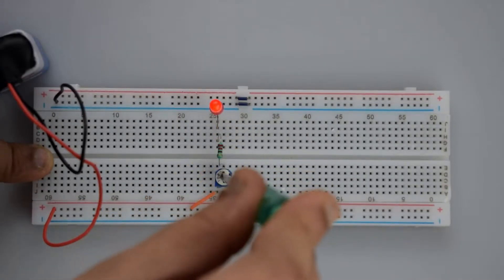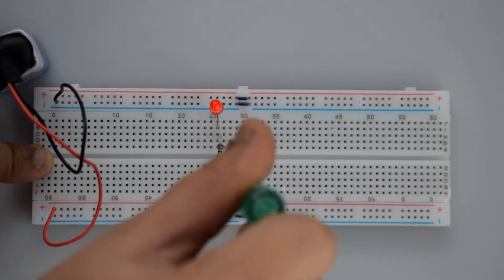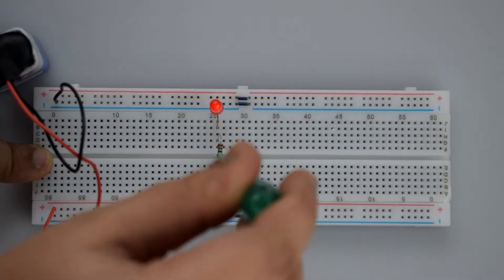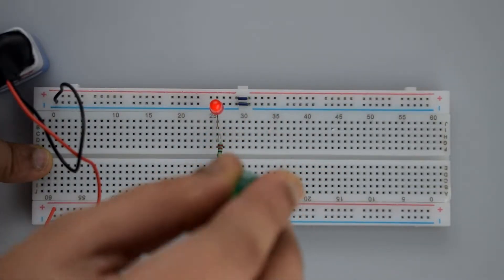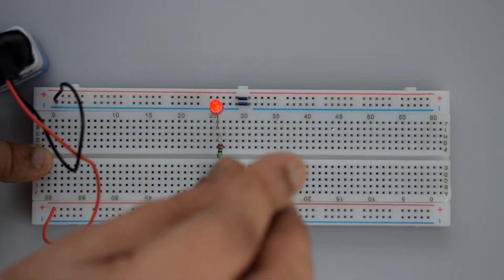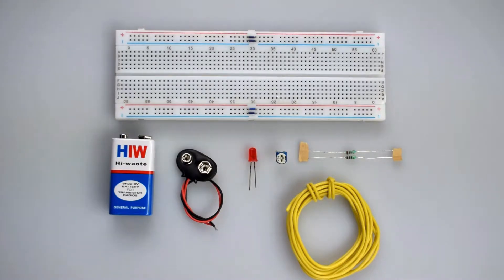What this circuit basically does is increase and decrease the voltage the LED gets by changing the resistance. You can change the value of the resistor to make the LED brighter and dimmer. So let's get started.